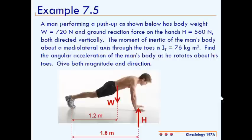This is example 7.5. A man performing a push-up, as shown below, has a body weight of 720 newtons and ground reaction force on the hands of 560 newtons, both directed vertically. The moment of inertia of the man's body about the mediolateral axis through the toes is I = 76 kilograms meters squared. Find the angular acceleration of the man's body as he rotates about his toes. Give both magnitude and direction.